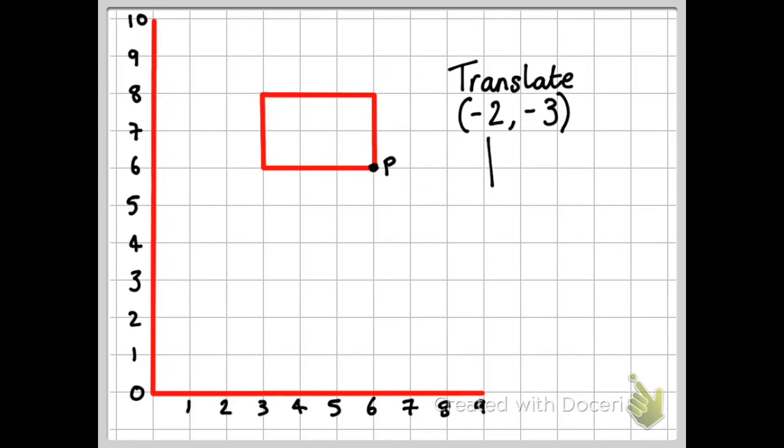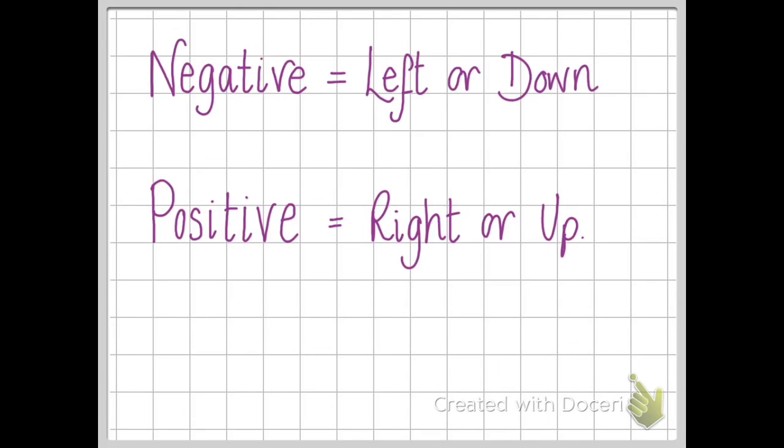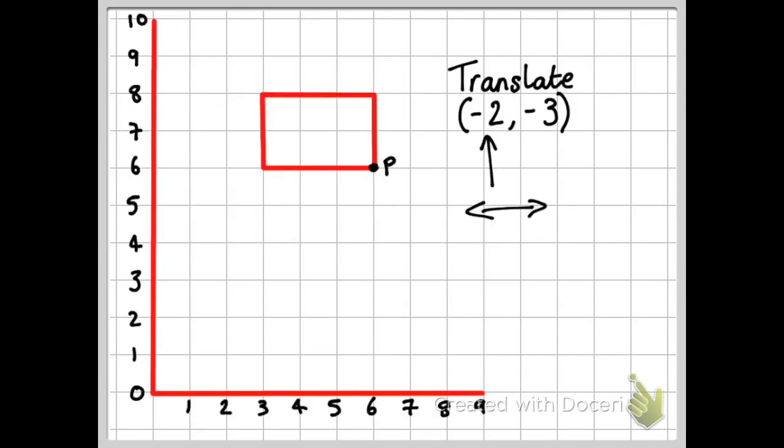Now, as we said about 30 seconds ago, the first number tells me if I'm going to be going left or right. Because it's negative two, that means I'm going to be going left. So P, I need to go left by two. So one, two. So that's where it is at the minute.